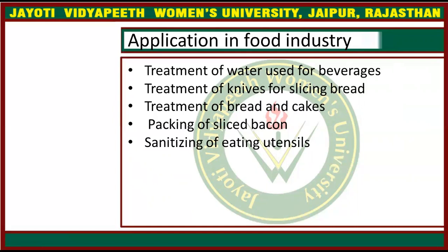Second is the treatment of the knife for slicing bread. For example, in a bread manufacturing plant, bread is sliced into particular shapes and sizes using a specific knife. We have to radiate the knife first — pass the knife through radiation — and after that, we use it to slice the bread. Third is the treatment of bread and cake, where in our bakeries we treat bread and cake using radiation.